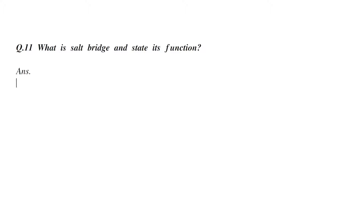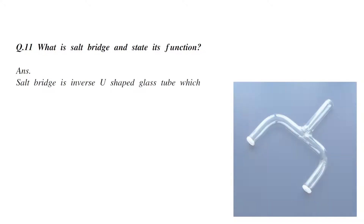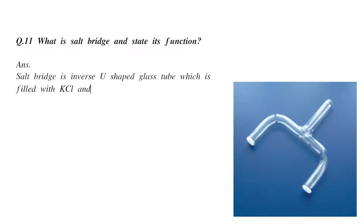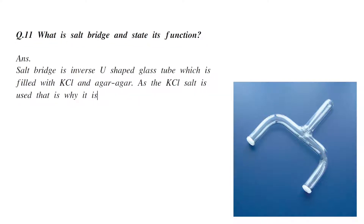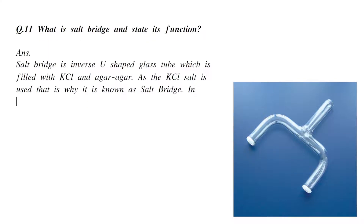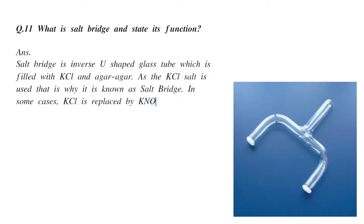What is salt bridge and state its function? A salt bridge is an inverse U-shaped glass tube which is filled with KCl and agar-agar solution. As KCl salt is used, that is why it is known as a salt bridge. In some cases, KCl is replaced by KNO3 or ammonium nitrate.